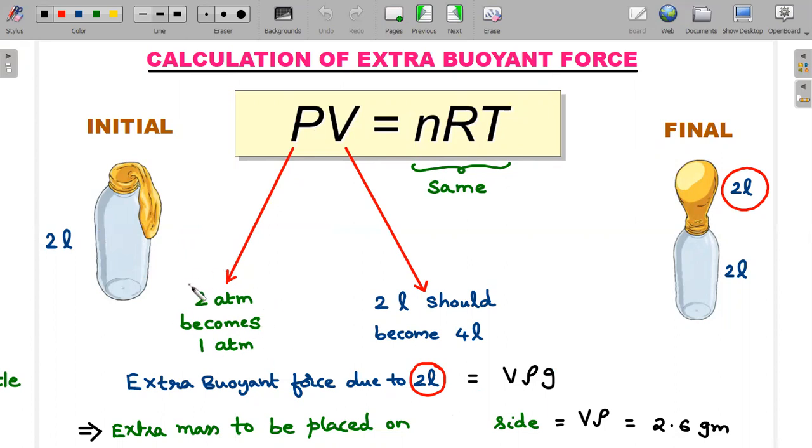I hope you understand that since the pressure became half, volume should double so that the product remains constant. So whatever 2 liter of gas is there, the expansion should ensure that it becomes a 4 liter gas. Since 2 liter of the metal bottle is fixed, the balloon's expansion should yield a 2 liter extra value. So the total of 4 liters, I ensured that the 2 liters should be of the balloon.